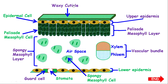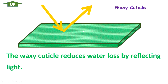Let's do the waxy cuticle first. The waxy cuticle is on the outermost part of the leaf, so it's a covering of the leaf. As the name suggests, it is waxy, which means it provides some form of sheen. This sheen will help to reduce water loss by reflecting light. Once light has been reflected from the leaf, it will reduce evaporation of water, so the leaf can retain most of its water to keep the plant turgid and also to aid in photosynthesis.